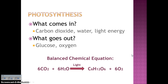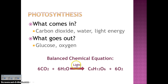The balanced chemical equation for photosynthesis is: 6CO2 plus 6H2O yields — sometimes with light energy shown above or to the left of the arrow — C6H12O6, which is glucose, plus 6O2, which is oxygen. Write this down under number six on your notes organizer.